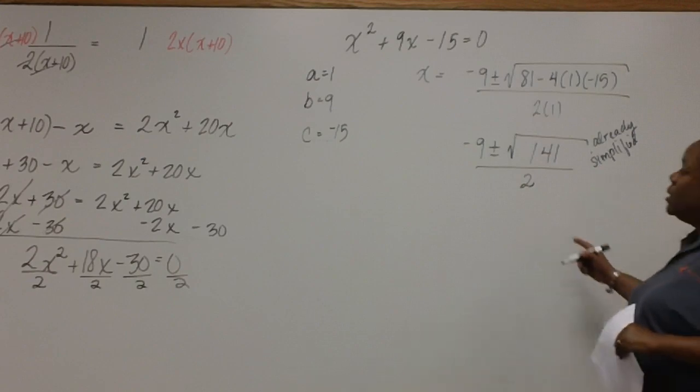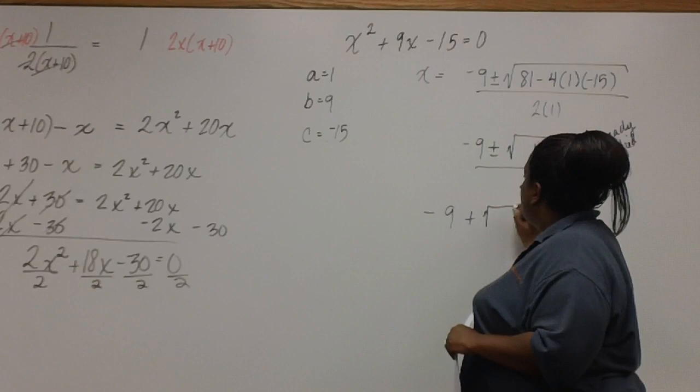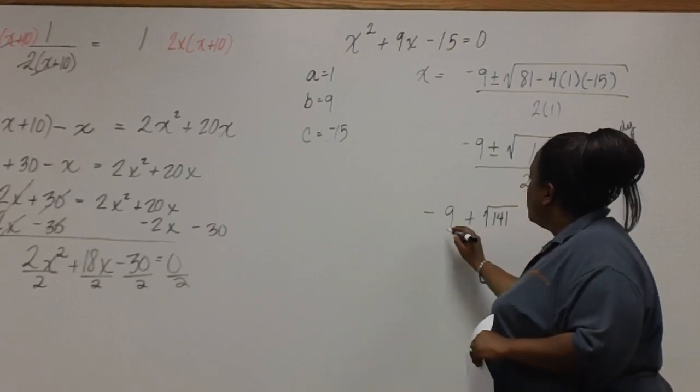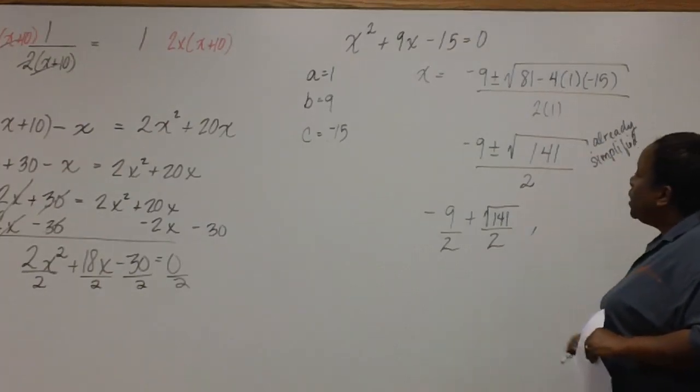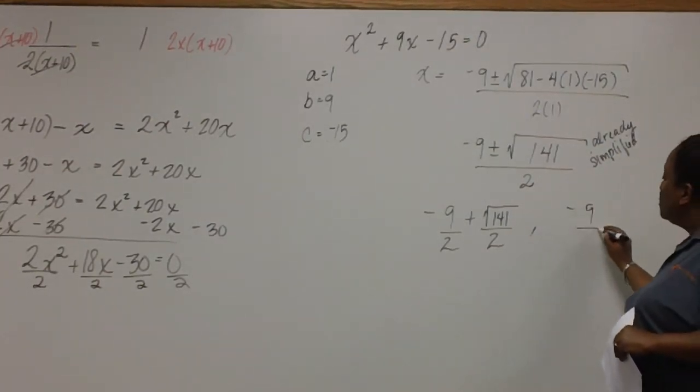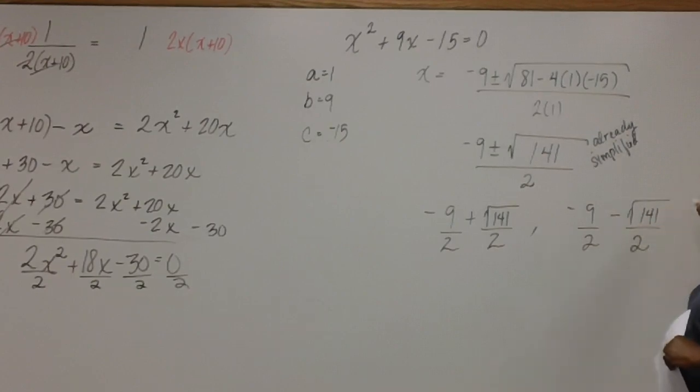So now we're ready to break it apart. We have negative 9 plus the square root of 141, and this is over 2. And then with the minus sign, we have negative 9 minus square root of 141, and each one is over 2.